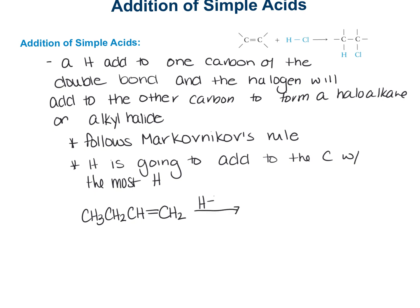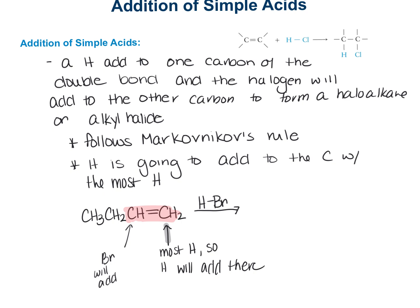Let's do an example with HBr. The first thing we do is highlight the two carbons of the double bond — that's where one hydrogen and the bromine will add. We identify which carbon has the most hydrogens, so hydrogen will add there. That means Br will add to the one with the fewer hydrogens. The product is CH3-CH2-CHBr-CH3, following Markovnikov's rule.